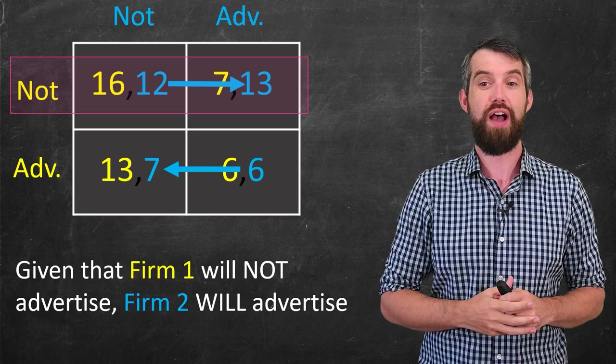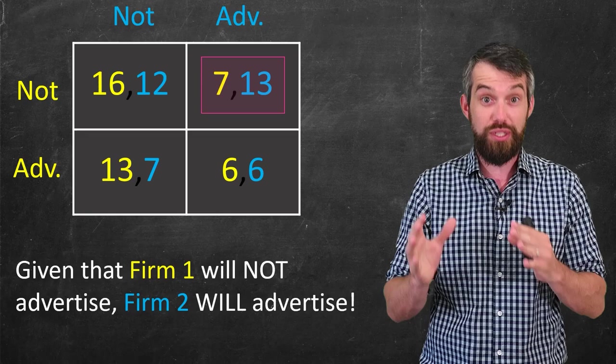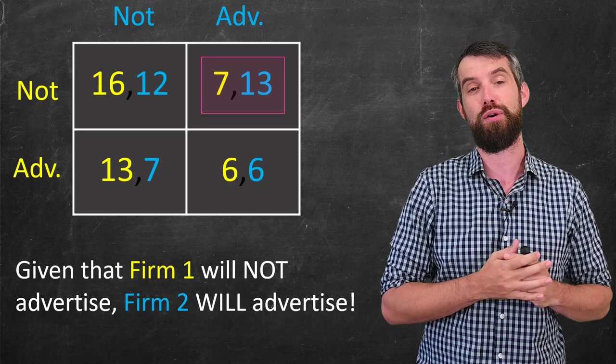And so we know the sort of final answer of how this is going to play. Firm one is going to play not advertised. Firm two is going to play advertised. And the final result, the final payoff is going to be seven units to firm one and 13 units to firm two.